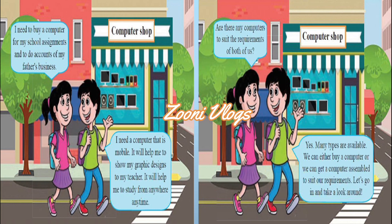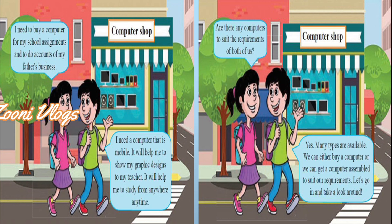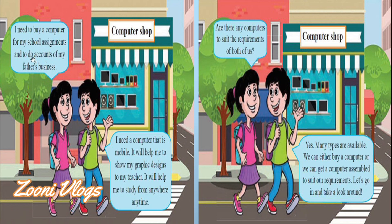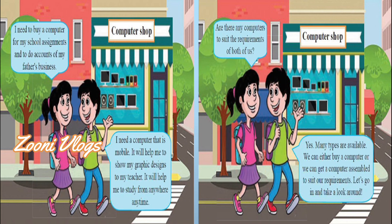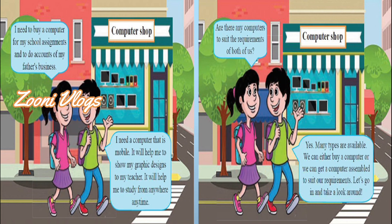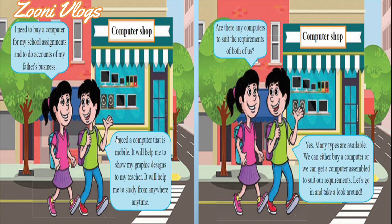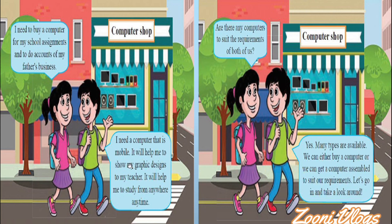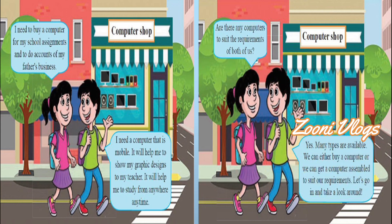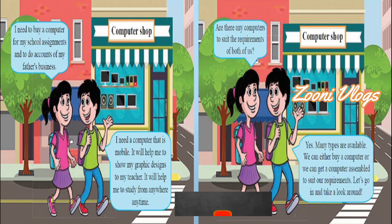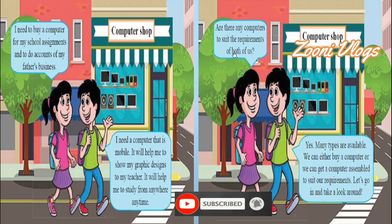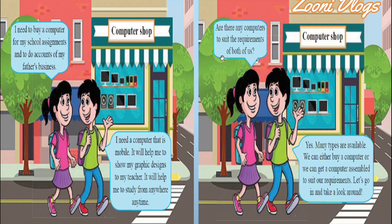A computer can differ from person to person. Let's study that. There's a computer shop with two students going to purchase a computer. This girl says: 'I need to buy a computer for my school assignments and to do accounts of my father's business' — two purposes. This boy says: 'I need a computer that is mobile; it will help me to show my graphic designs to my teacher and study from anywhere, anytime' — three purposes.